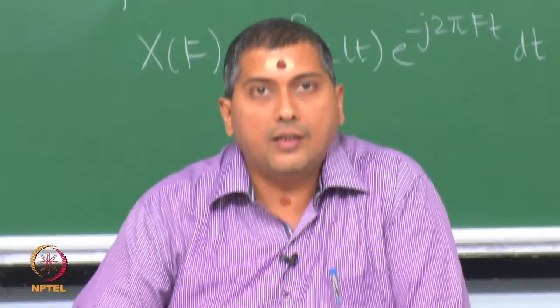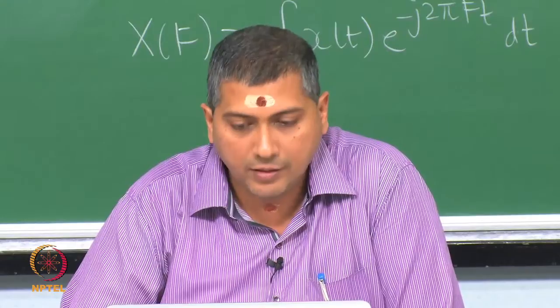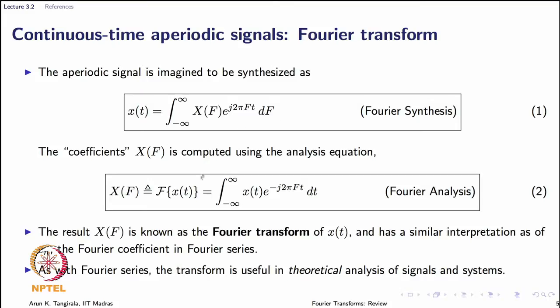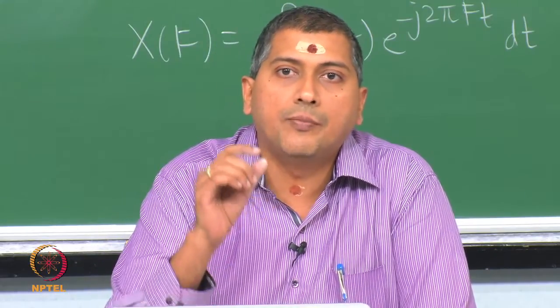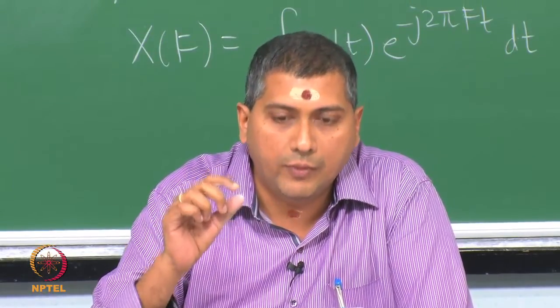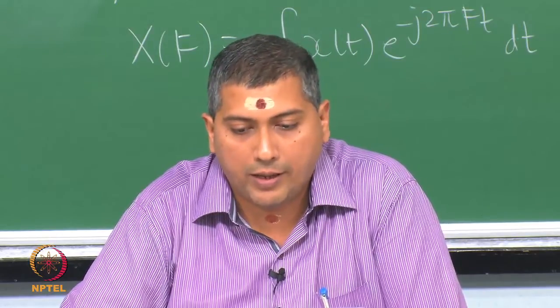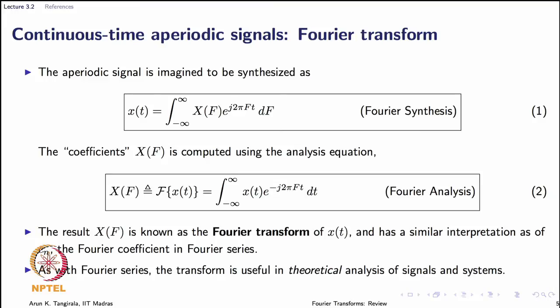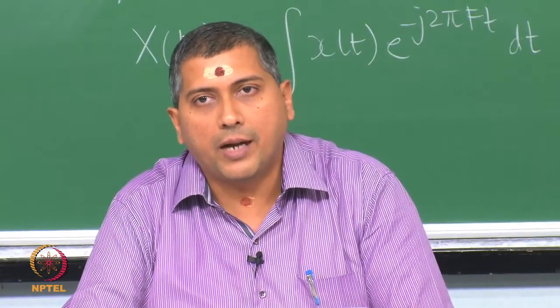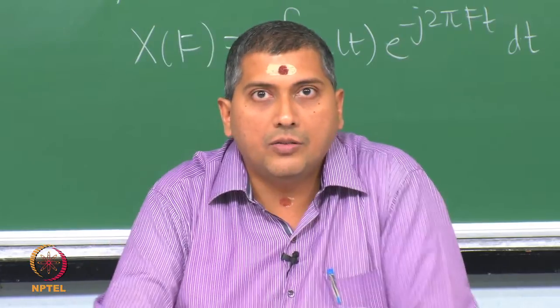Returning to interpretation: X(f) is a complex quantity. It denotes the weights associated with the analysis function — the complex sinusoid — and contains phase information. The magnitude of X(f) gives the weight associated with the corresponding building block, and the phase of X(f) tells us when that particular frequency started to exist in the signal. As with Fourier series, this transform is useful in theoretical analysis; in practice we have only sampled data, so these equations are not directly valid for sampled data.